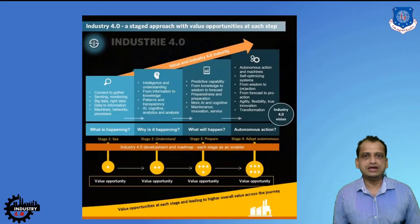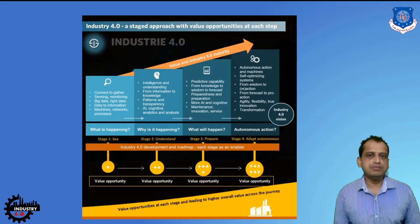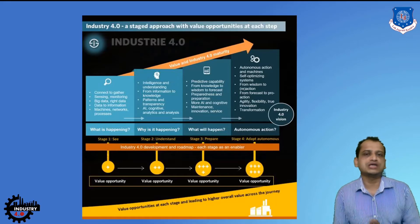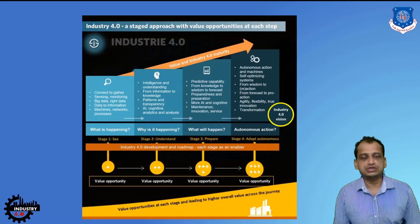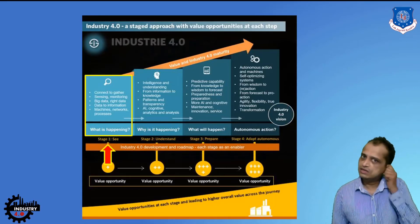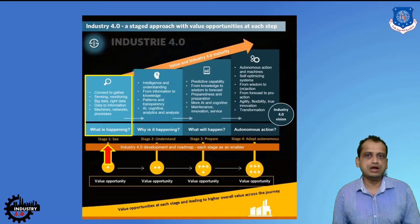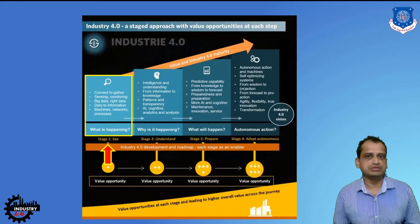Let's look in detail at the framework of strategy. This is the outline of the strategy a company can implement within the industry, using a stage approach to get the vision of Industry 4.0 — which is complete or partial autonomy. The first stage is 'what is happening' within the company. To do that, the company will try to gather as much data as possible from machineries and processes with the help of sensors and actuators, as discussed in previous lectures.